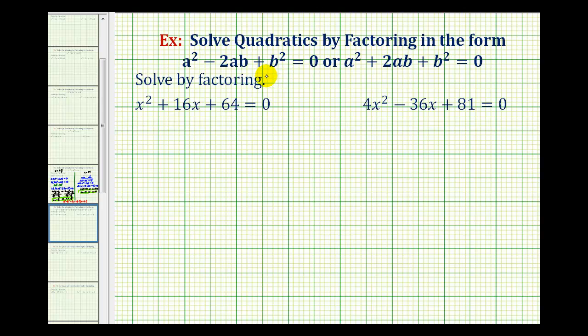I'm not a big fan of memorizing these two formulas because if we look at our first example, we have x² + 16x + 64 = 0. I recommend we go ahead and factor this as we normally would when we have a leading coefficient of one.